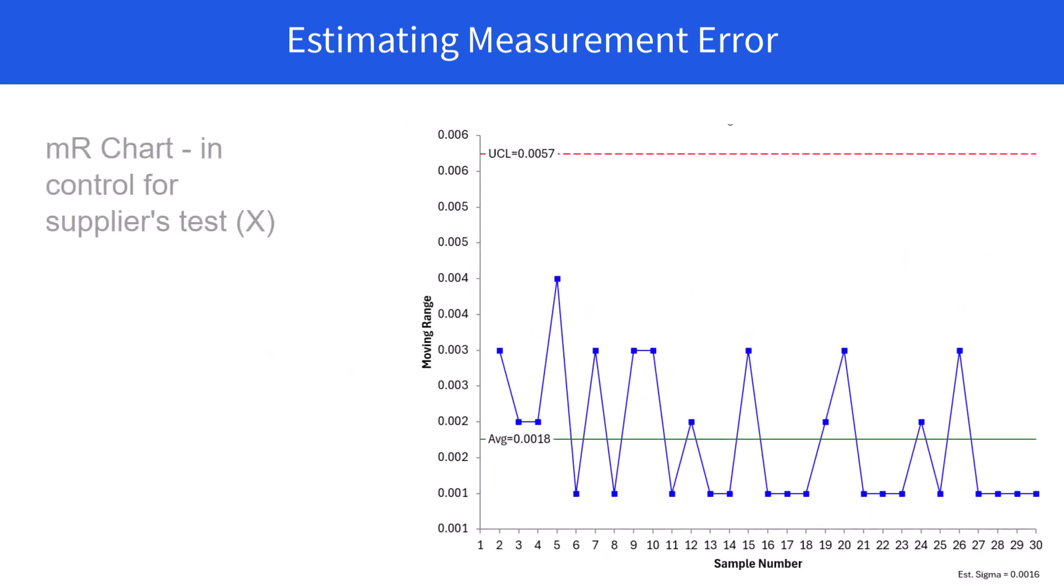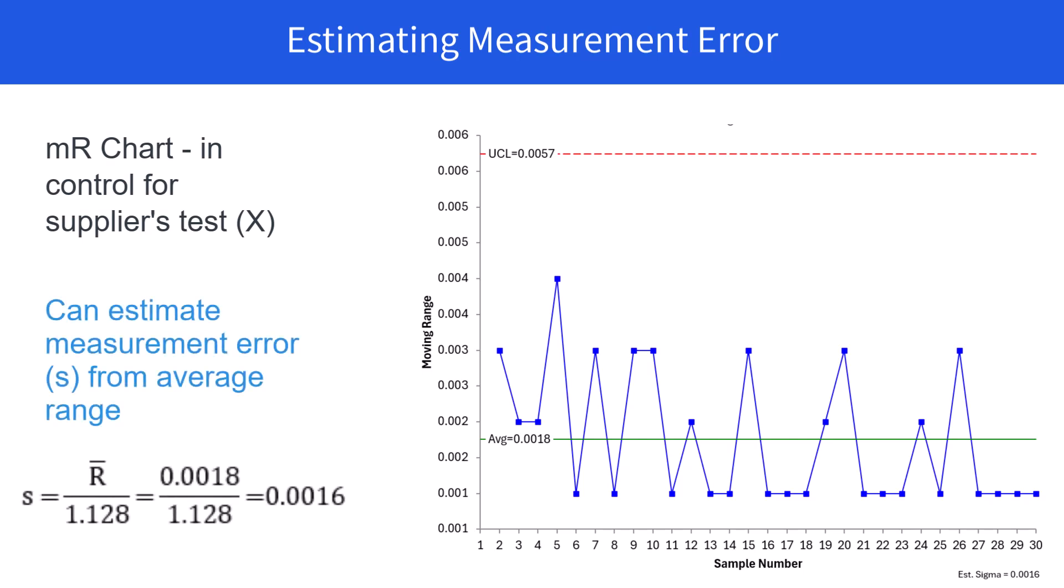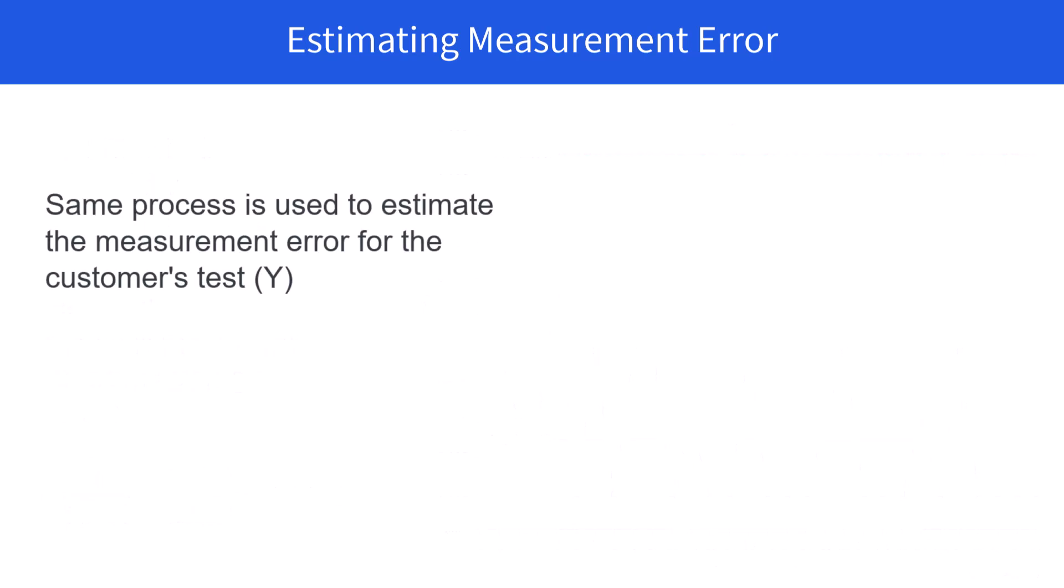We can construct the moving range chart now. It's in statistical control. You can estimate the measurement error from the average range. The average range is 0.0018. Divide that by 1.128, and you get your measurement error of 0.0016.